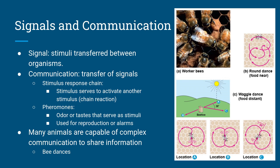So those behaviors — fixed action pattern, migration, and behavioral rhythms — are all usually in response to some environmental features, such as lighting or magnetic fields. But the next category, signals and communication, involves signals that are transferred between organisms rather than just environmental responses.